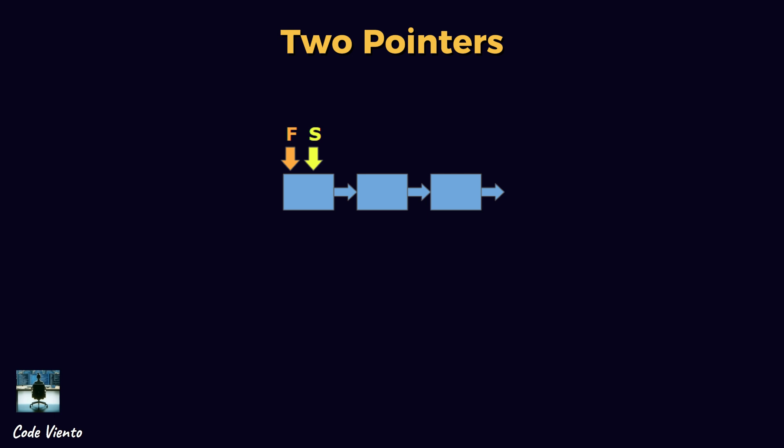Another variation is when both pointers move in the same direction. This approach is not the sliding window technique, which maintains a dynamic range, but it's used in problems like finding the middle of a linked list. In that case, the slow pointer moves one node at a time, while the fast pointer moves two nodes at a time. When the fast pointer reaches the end, the slower pointer is in the middle.